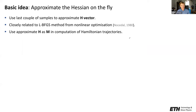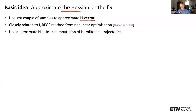This brings us to a strategy based on quasi-Newton methods. The basic idea is to not pre-compute the Hessian, which is totally out of scale, but to approximate the Hessian of the potential energy on the fly — that is, as the sampler is running. We use the last couple of samples to approximate the Hessian times an arbitrary vector, which is all we need for the algorithm. This is closely related to the well-known LBFGS method from nonlinear optimization. We then use the approximate Hessian as a mass matrix for Hamiltonian trajectory computation.